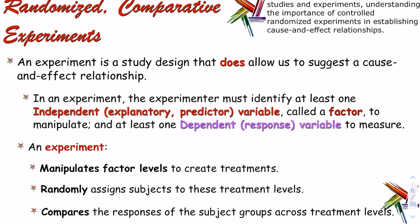An experiment is a study that does allow us to suggest a cause-and-effect relationship. In an experiment, the experimenter must identify at least one independent explanatory predictor variable — called a factor — which is the thing being manipulated. And at least one dependent response variable to measure. We manipulate factor levels to create treatments, randomly assign subjects to those treatment levels, and then compare the responses across treatment levels to see if there's something of value.